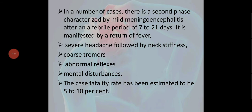In a number of cases, there is a second phase characterized by mild meningoencephalitis. After a febrile period of 7 to 21 days, it is manifested by a return of fever, severe headache followed by neck stiffness, coarse tremors (whole body vibration), abnormal reflexes, and mental disturbances. The case fatality rate has been estimated to be 5 to 10% — at least 5 to 10% of those who get the disease will die.